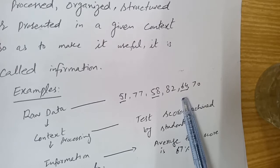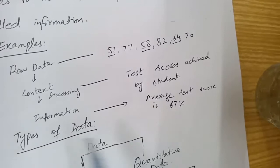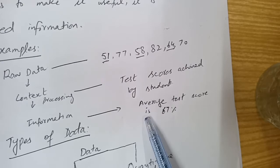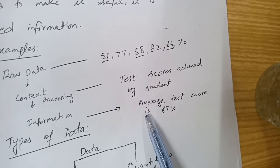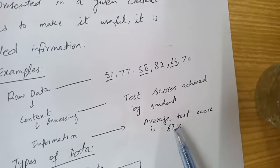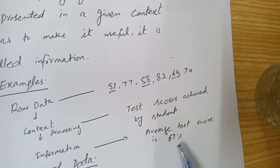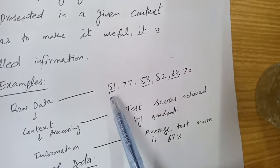Now we are clear about this raw data — these are the marks of students in a class, scored out of 100. The first student got 51, others got 77, 58, 82, 64, and 70. We then find the average: we add up these numbers and divide by the number of students, and we get that the average of this test is 67%. Now this becomes information.